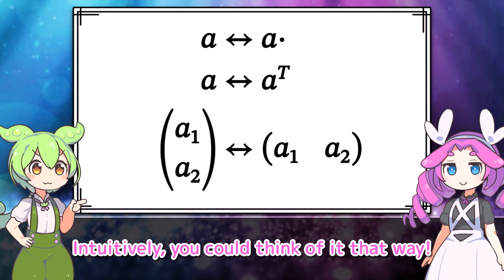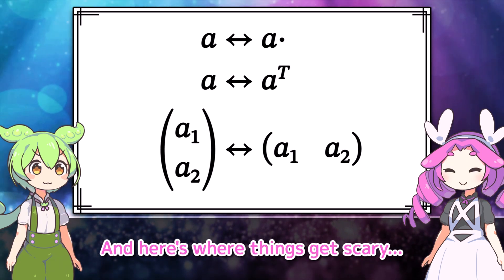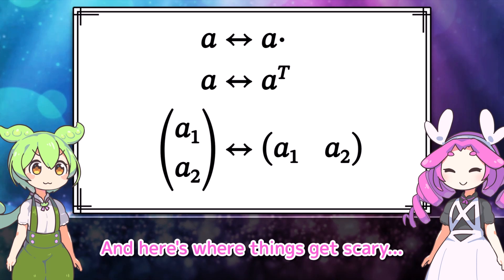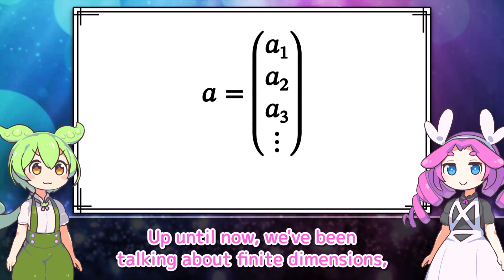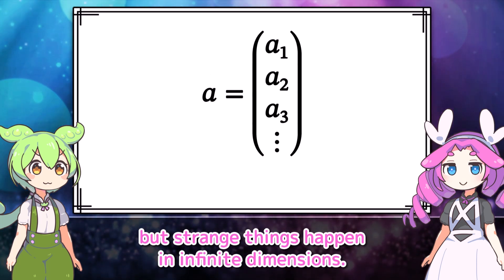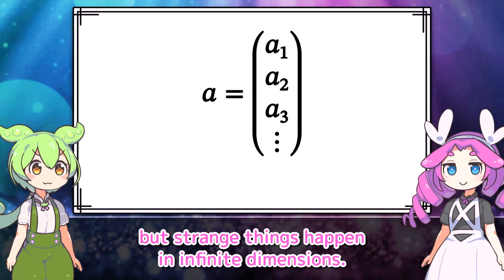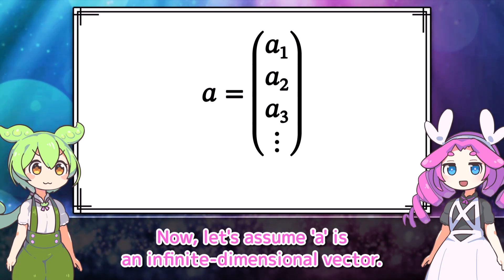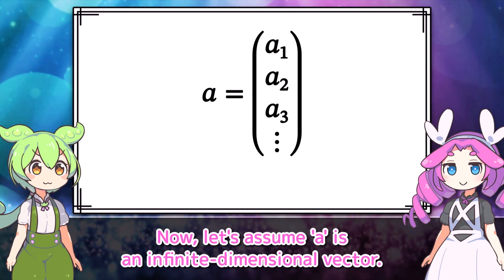In short, this was just the correspondence between the column vector and the row vector. Intuitively, you could think of it that way. And here's where things get scary. Up until now, we've been talking about finite dimensions, but strange things happen in infinite dimensions. Now, let's assume A is an infinite-dimensional vector.